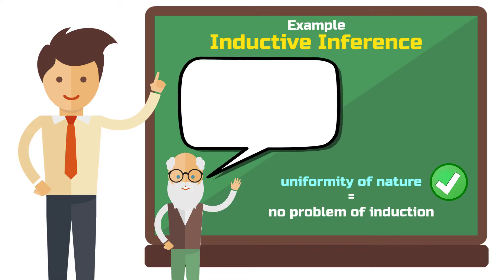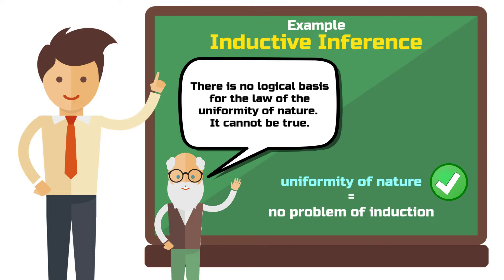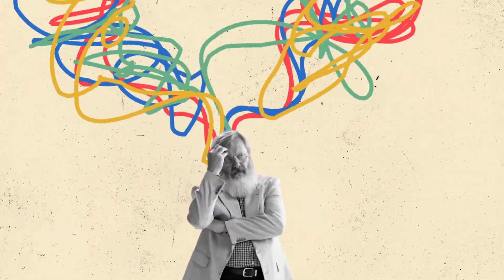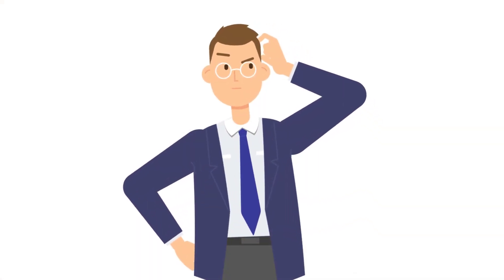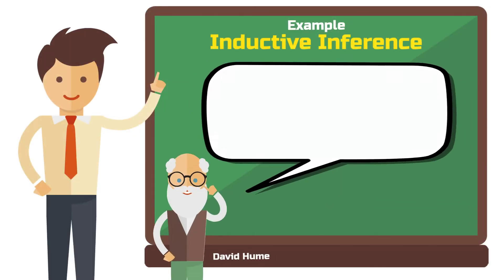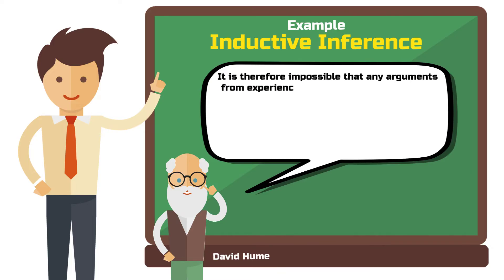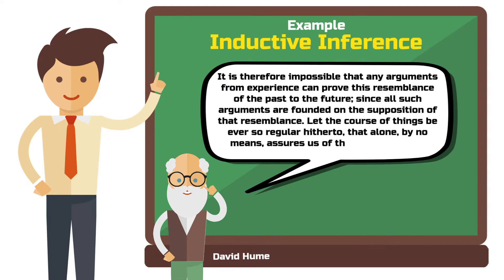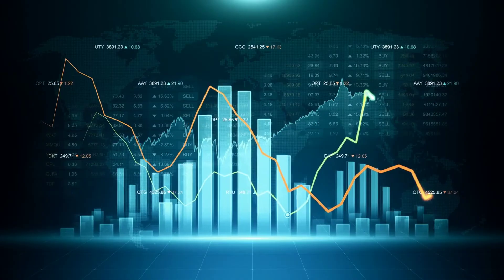But then David Hume comes into play. He asserts there is no logical basis for the law of the uniformity of nature — it cannot be proven true. Hume himself and those who followed tried to logically justify this principle but failed, partly because these attempts at justification themselves require inductive reasoning, which is subject to the same problem. Hume writes: "It is therefore impossible that any arguments from experience can prove this resemblance of the past to the future, since all such arguments are founded on the supposition of that resemblance. Let the course of things be ever so regular hitherto — that alone by no means assures us of the continuance of such regularity." If you've ever invested money in the stock market, then you know what he means.